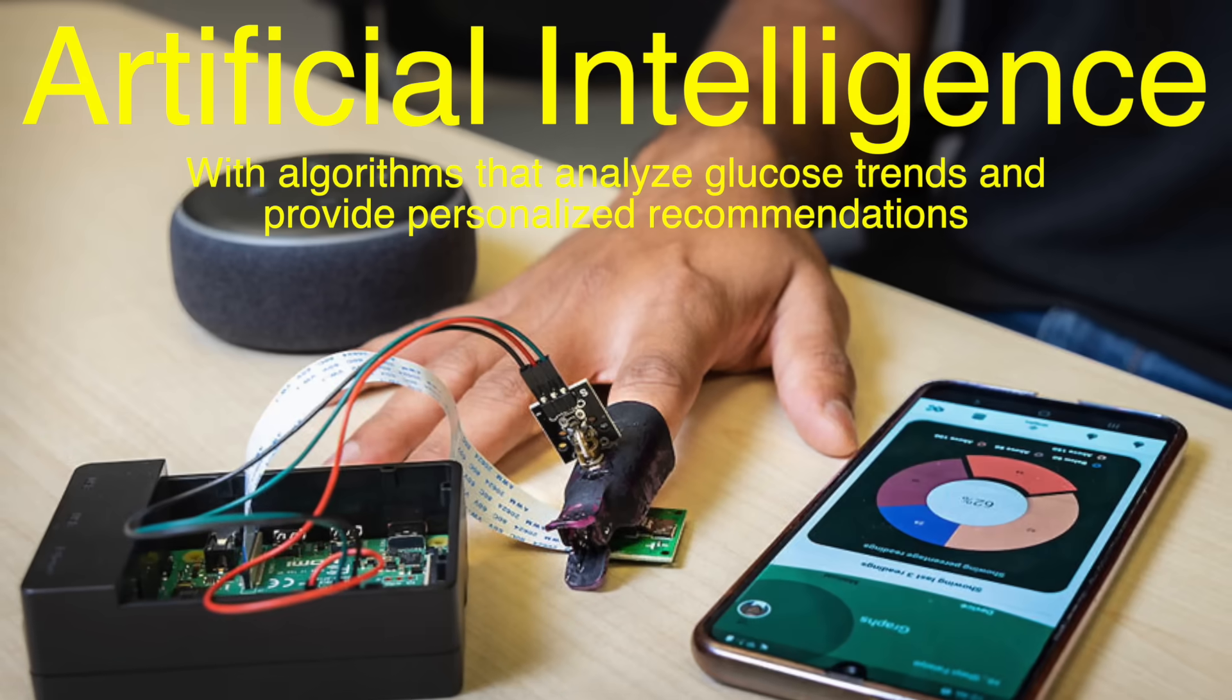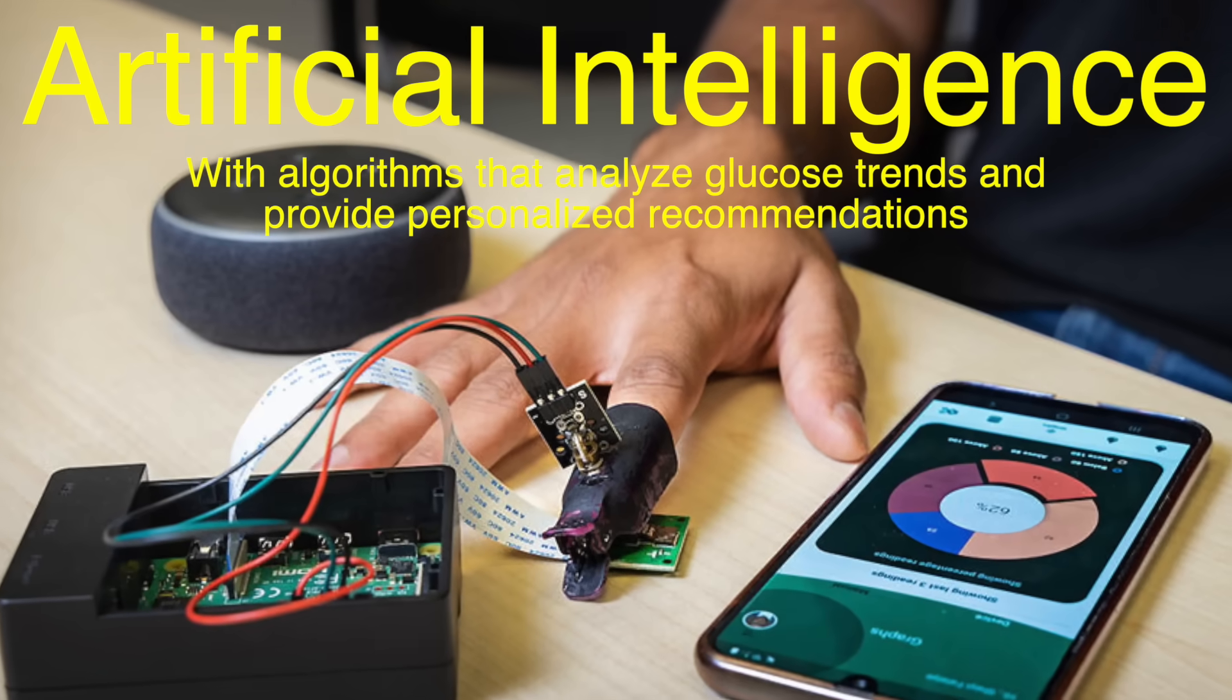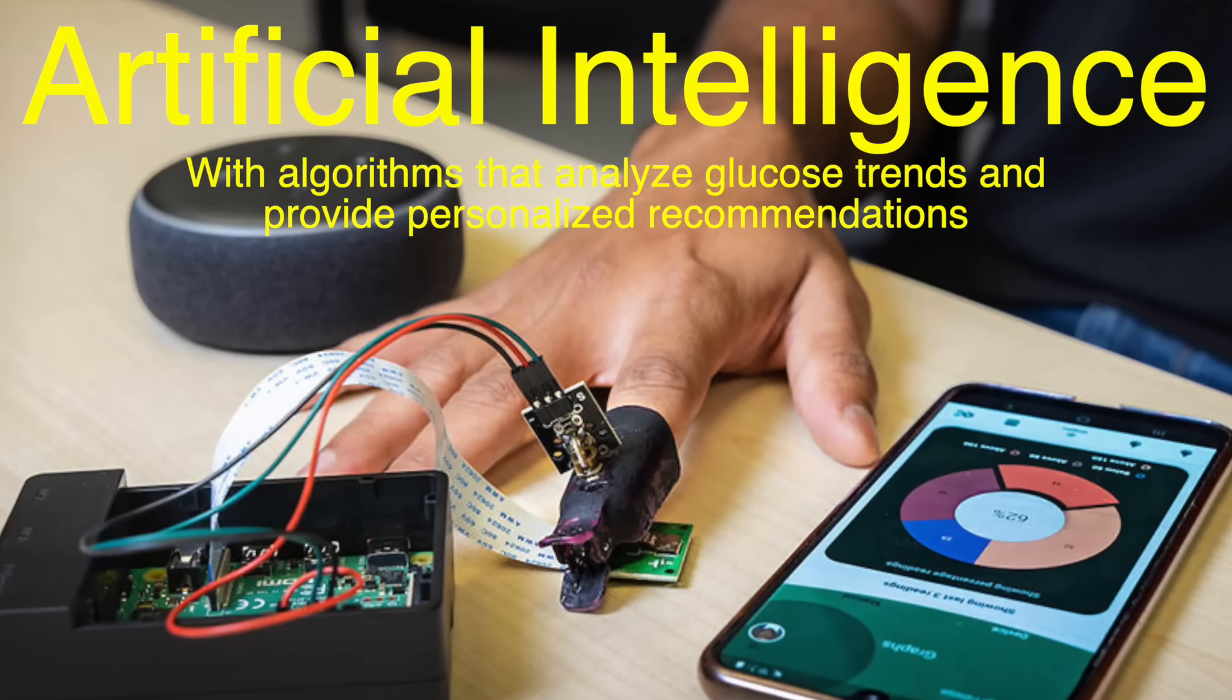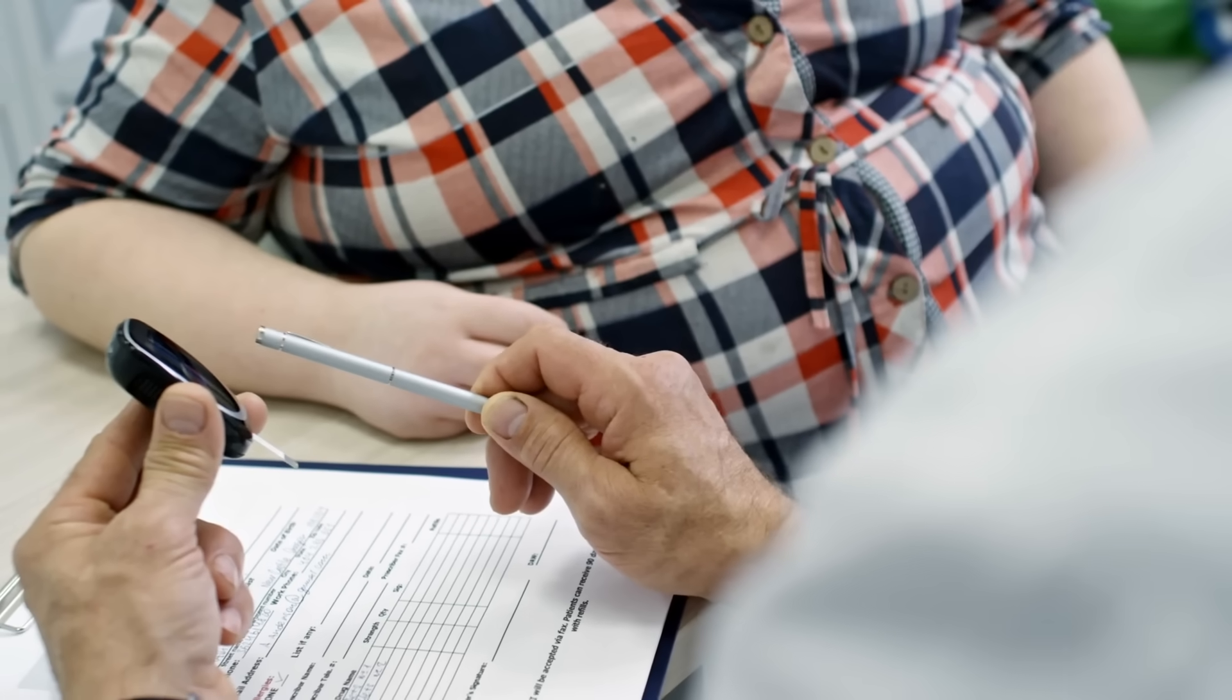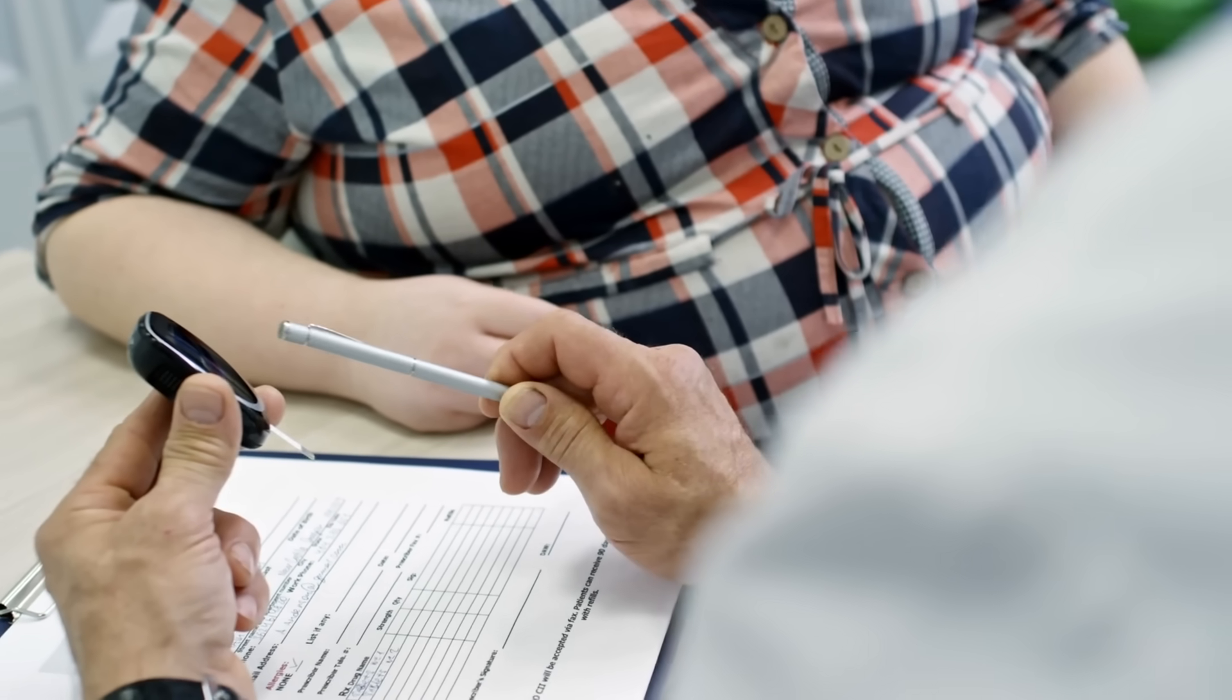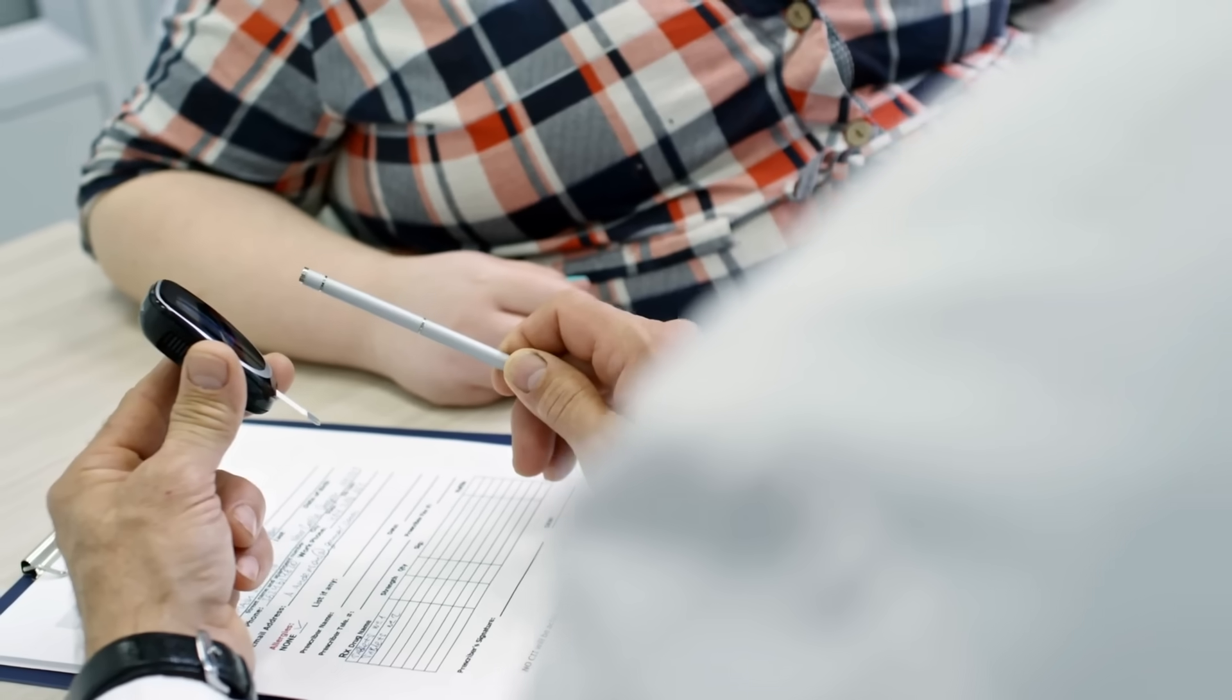Artificial intelligence is also playing a role with algorithms that analyze glucose trends and provide personalized recommendations. Pairing this with smart devices could revolutionize diabetes care, turning data into actionable insights.